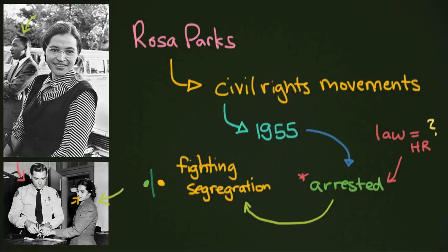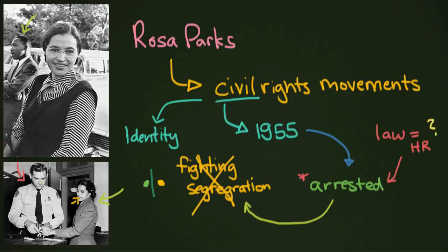Going back to civil rights, segregation is based on your identity — what you look like, maybe what gender you are — individual traits that make you different from someone else, and then in some way deemed worth segregating, taking away certain rights, or making you somehow different from others. Civil rights movements around the world are all about ending segregation. So that was your lesson on civil and political rights. We're going to move from this into the second dimension in the next video.